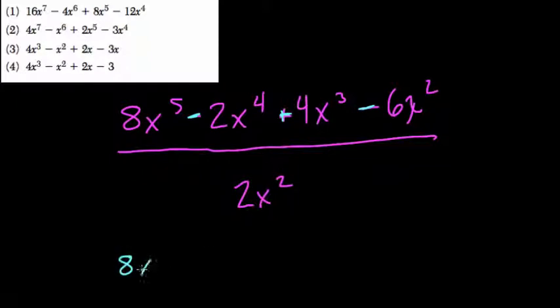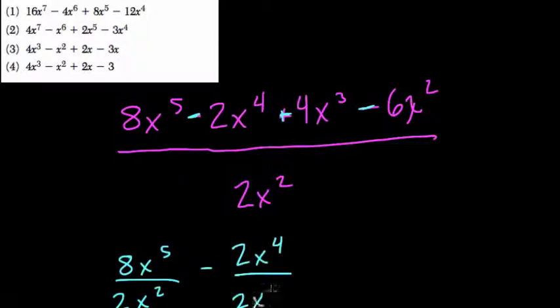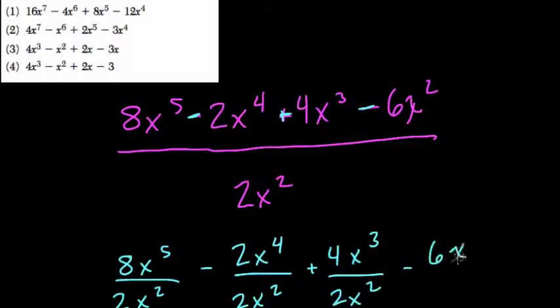So that means when I think about this, I have to realize each of the terms is really over 2x squared, just like when we have fractions with the same denominator. We could have combined these terms in the numerator and added them up, but they all would have been over the same denominator. They all would have been in the same terms, and that's really what's happening here.